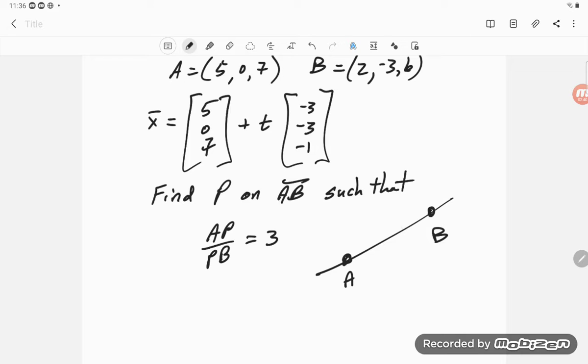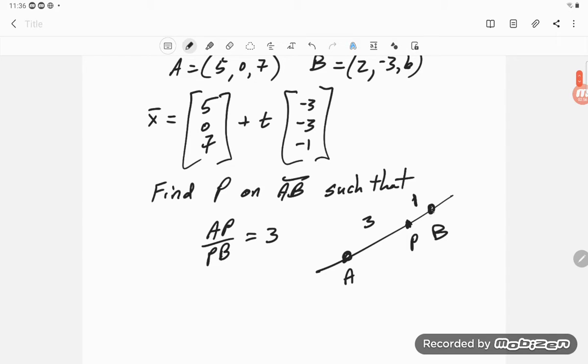AP, so if I go here to P where this is a unit of 1, whatever that means, and this is a unit of 3, so that's 1/4 of the way from B to A, or 3/4 of the way from A to B. There's one answer, and I can figure out where that is.